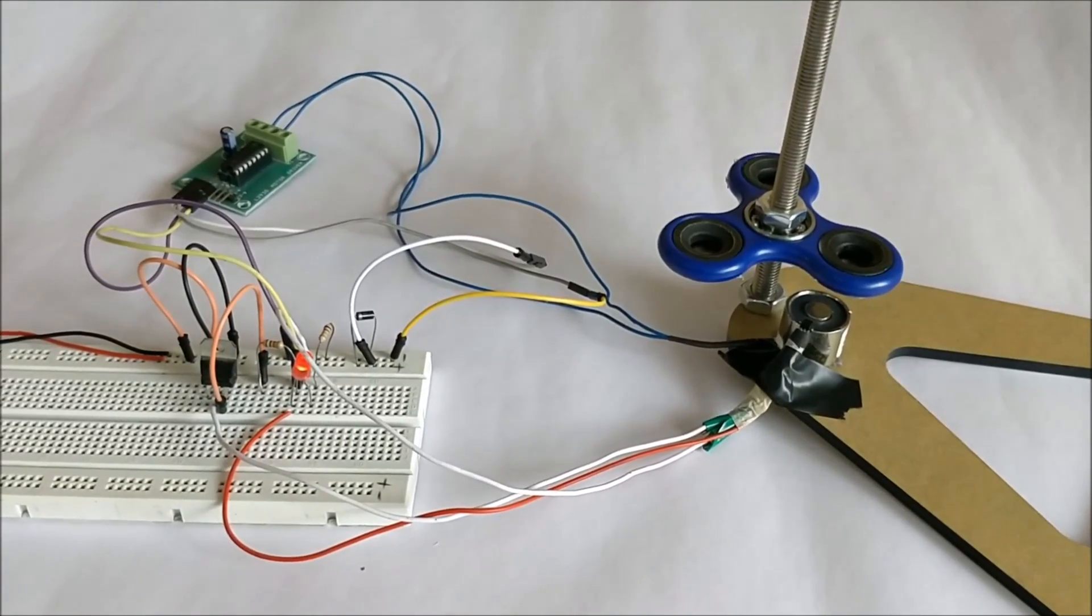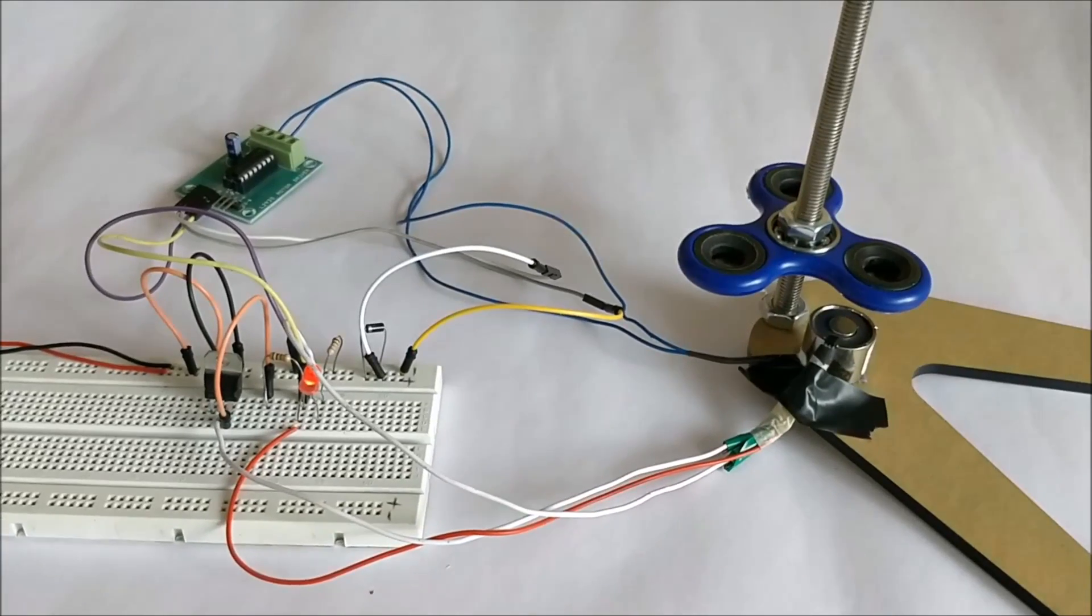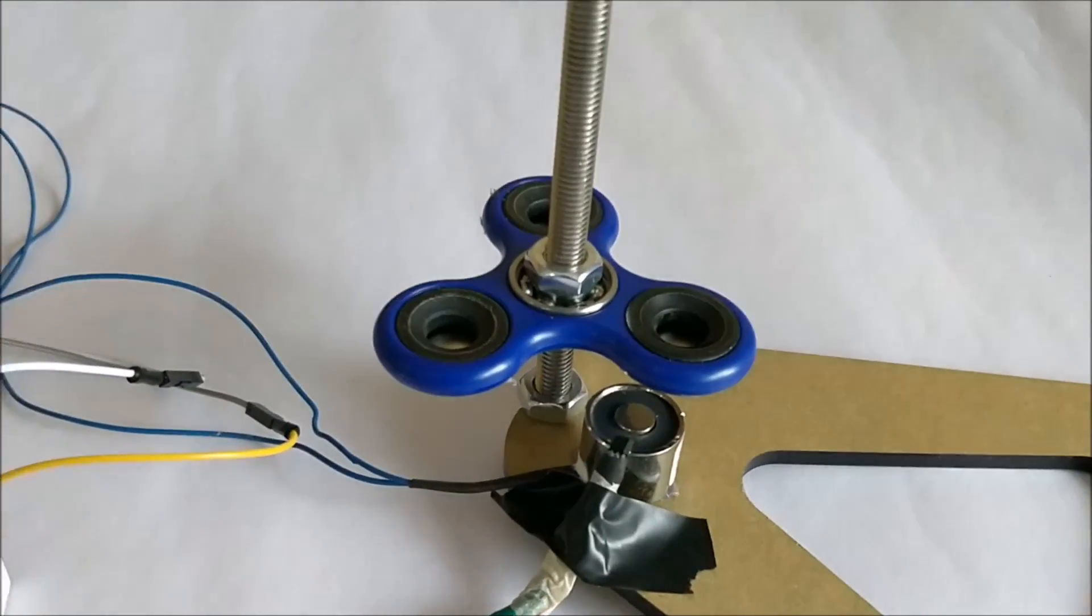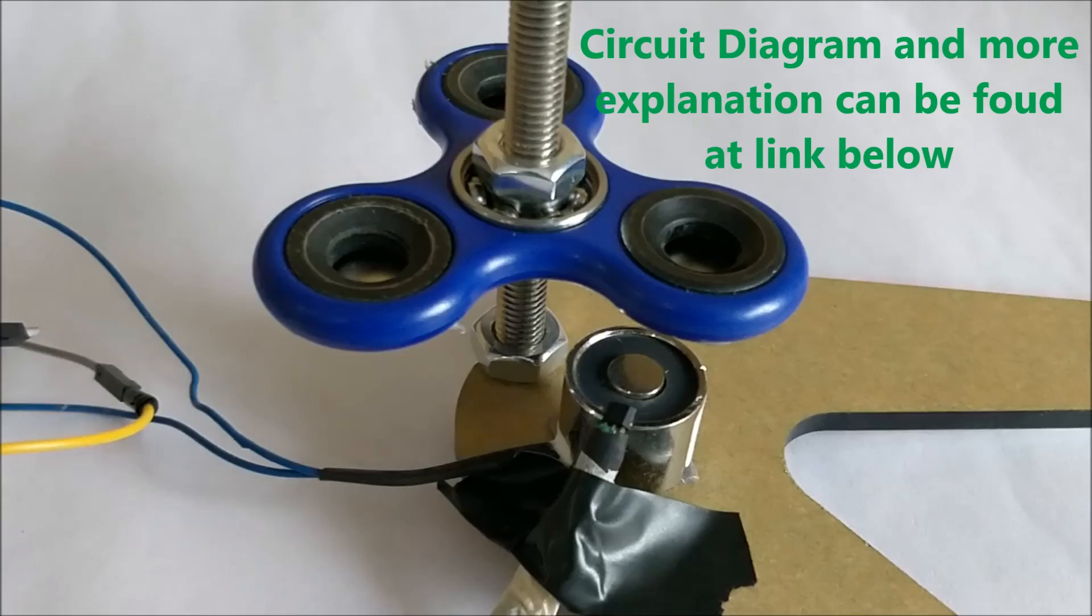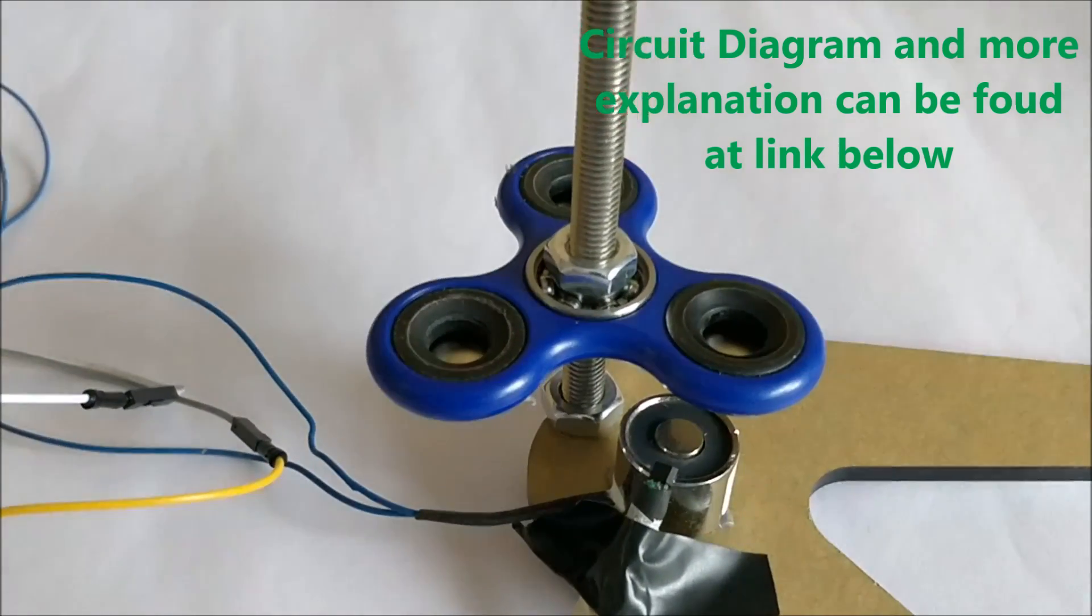Hello guys, welcome to another video of Circuit Digest. In this video I'll show you how you can convert your fidget spinner into a BLDC motor. As you can see, I have mounted this fidget spinner over this nut and bolt arrangement and I have a small 12-volt electromagnet over here followed by a hall effect sensor.